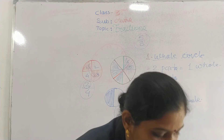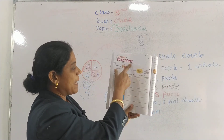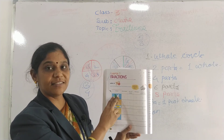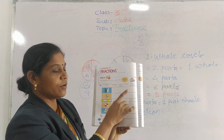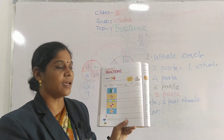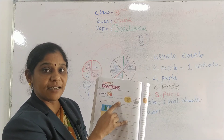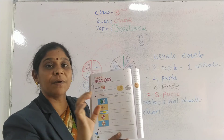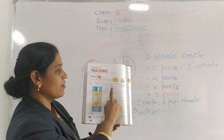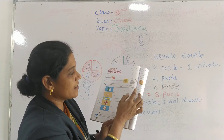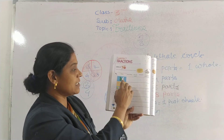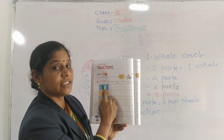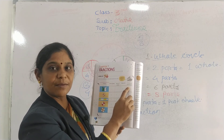अब देखो, आपके textbook में कुछ parts दिये हुए हैं। पहली picture है butterfly — butterfly की two wings दिये हुए हैं। पैंसिल लो, साथ-साथ में आपको fill up भी करना है। Part shaded कितने? Obviously one part। Parts not shaded कितने? One। Total parts कितने? Two। Fraction of shaded part — one by two। Shaded part को ऊपर और total parts को नीचे write करेंगे। One by two।